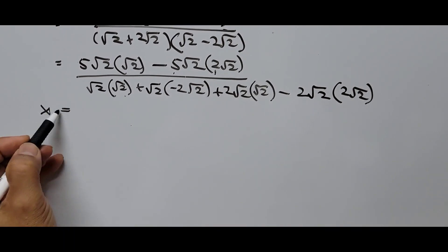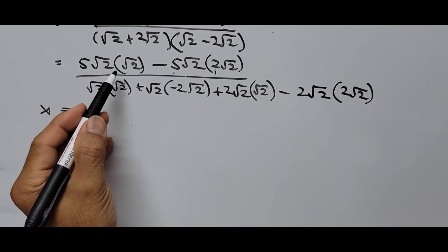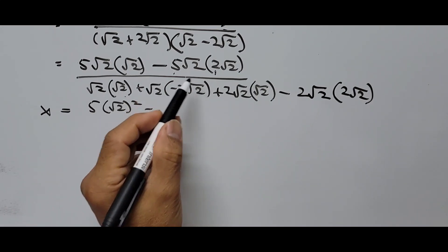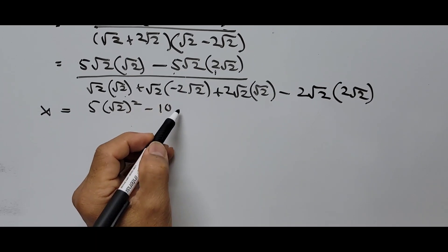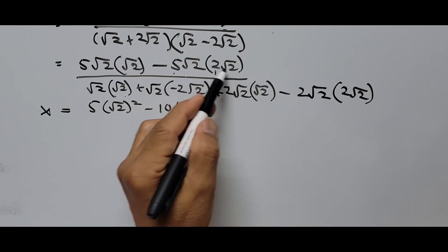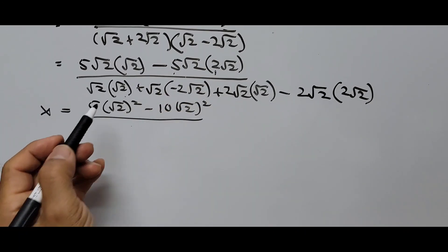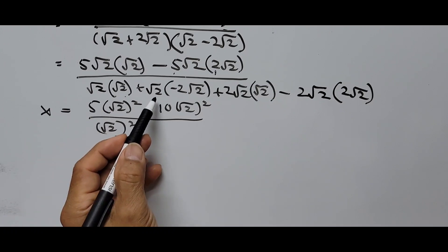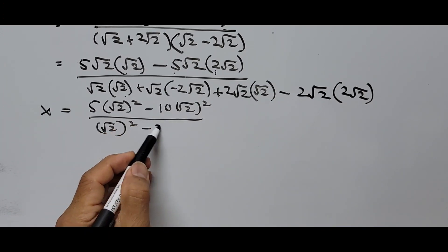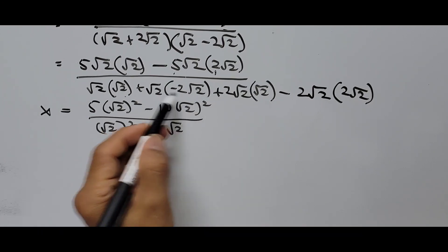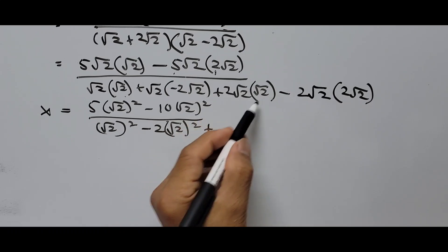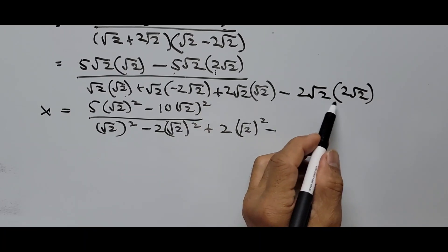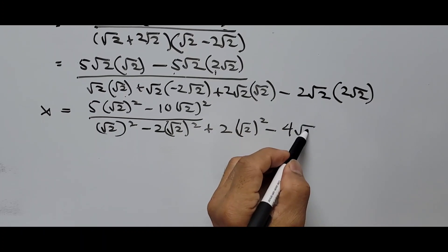Simplifying further: x equals 5 times square root of 2 times square root of 2, which is 5 times (square root of 2) squared, minus 5 times 2 times 10 — (square root of 2) squared again. Since we have two of those, we divide by (square root of 2) squared. With the sign terms: that's square root of 2 times square root of 2 giving plus and minus terms, so that is minus 2 times (square root of 2) squared.